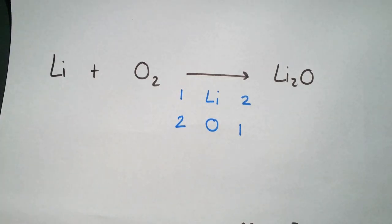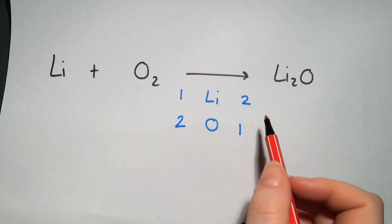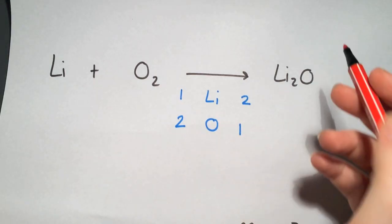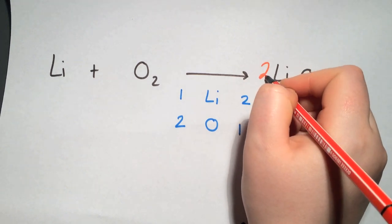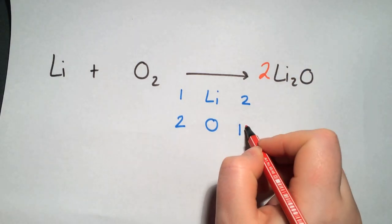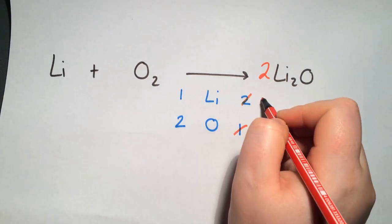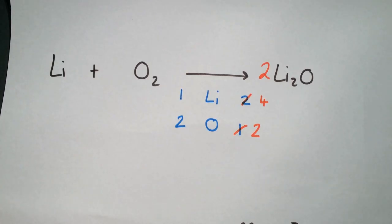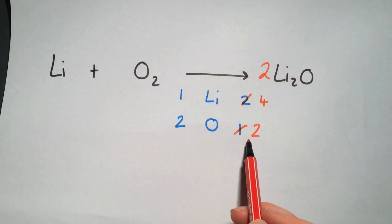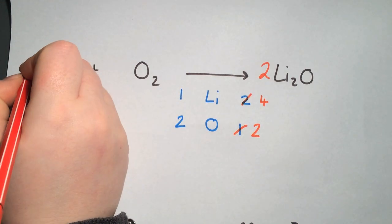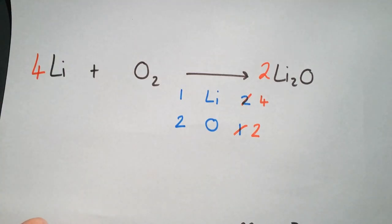Usually I would tell you to balance the metals first, however in this case I'm going to show you straight off how to balance this. We only have two oxygens on one side and one on the other, so if we put a large two in front of our product, that multiplies the oxygen by two and also multiplies the lithium by two, giving us four lithiums. The oxygen is now balanced but the lithium is not, so we put a large four in front of the lithium to balance it.